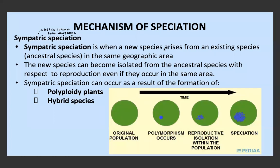This is the sixth video on evolution and in this video we're going to have a look at the second type of speciation: sympatric speciation. As we said in the previous video, this type of speciation is a lot less common than allopatric speciation because there's no geographic isolation that occurs. So sympatric speciation is when a new species arises from an existing ancestral species in the same geographic area.